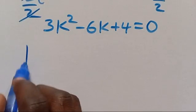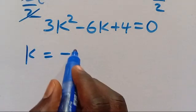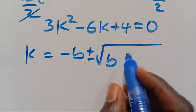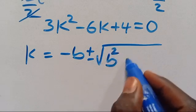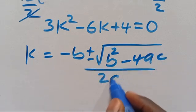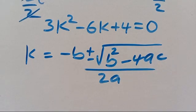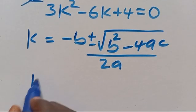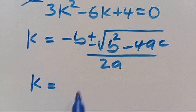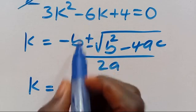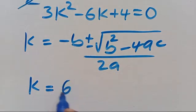We can get K using the quadratic formula: K equals minus B plus or minus square root of B squared minus 4AC, divided by 2A. Applying it here, our B is minus 6, so minus B gives plus 6, plus or minus square root of B squared which is 36, minus 4 times A which is 3, giving 12, times C which is 4, giving 48.